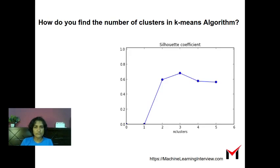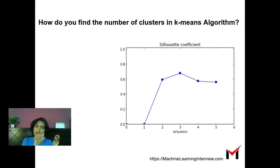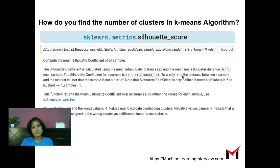If we take the silhouette coefficient for each point and compute the mean, we get the silhouette coefficient for the entire data set. Plotting this, we see it is highest at k equals 3. This metric also handles overfitting to some extent: if we keep increasing k, clusters become smaller and the mean nearest-cluster distance decreases, penalizing over-splitting. The silhouette score is easily available in scikit-learn — you can find it in sklearn.metrics.